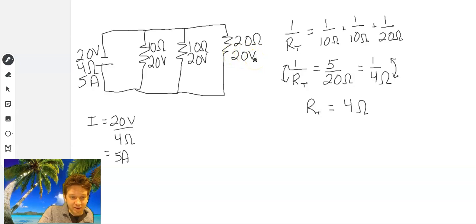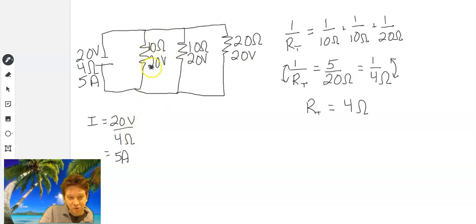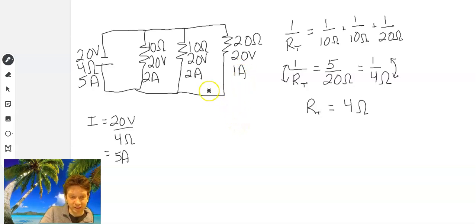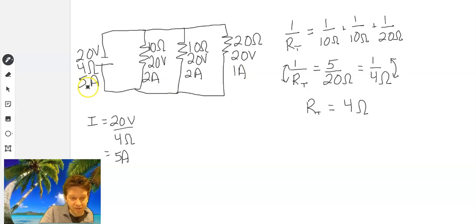Using Ohm's law again, current equals voltage divided by resistance. You'll get 20 divided by 10, which is 2 amps. Again, 20 divided by 10 is 2. And 20 divided by 20 is 1. To check in a parallel circuit, total current equals the sum of all the currents through each branch. So 2 plus 2 plus 1 does equal 5. So we're good there.